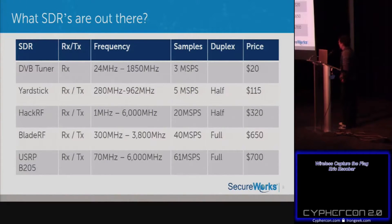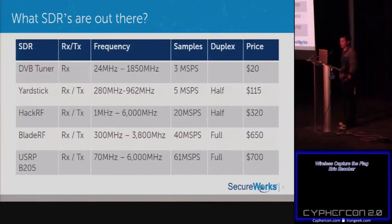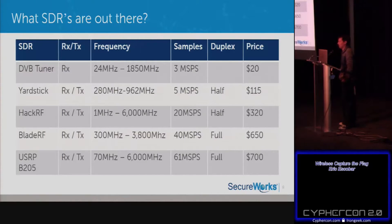Here's a quick overview comparing different SDRs. If you just want to mess around with low cost, you can get a $20 TV tuner off Amazon — it can only receive, but it has a wide range and decent sample rate. You can see pretty much all the signals we'll talk about in the replay attacks. It's cheap, easy, and very well supported with tons of tutorials.